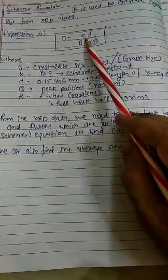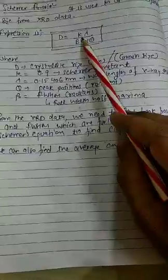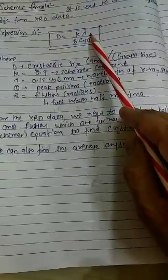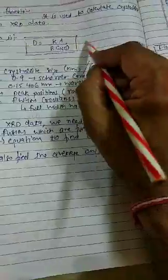What about K? K is basically the Scherrer constant which has a value of 0.9. Lambda is nothing but the wavelength of the X-rays.